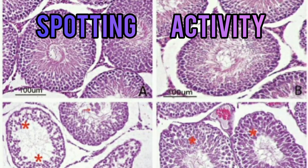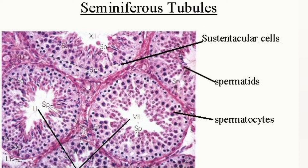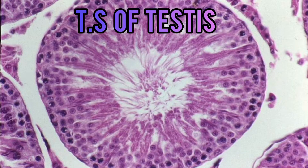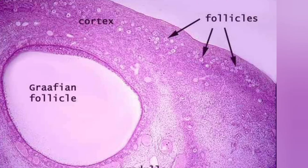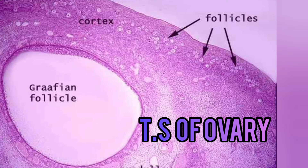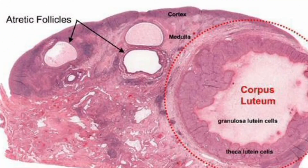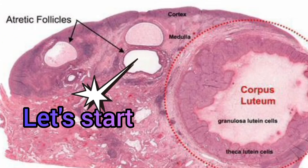Hello students, this is another spotting activity for you, Class 12. Here you have to identify the stages of gamete development — that is the TS of testis and TS of ovary — through permanent slides. So let's start the activity.